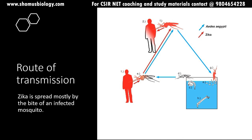Zika is spread mostly by the bite of an infected mosquito. Mosquitoes can grow in any stagnant water near your house, particularly where there are plants and stagnant water where mosquitoes lay their eggs and larvae develop into adult mosquitoes. If a mosquito bites an infected person, it acquires the virus — now the mosquito is infected. When this infected mosquito then bites a healthy individual, it can cause infection. The specific mosquito involved is Aedes aegypti.